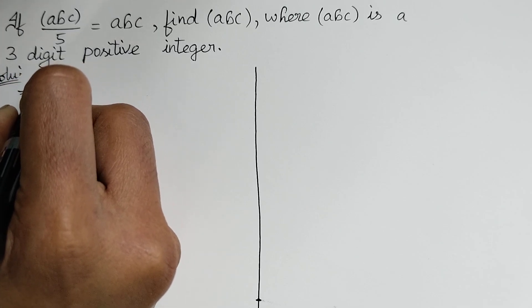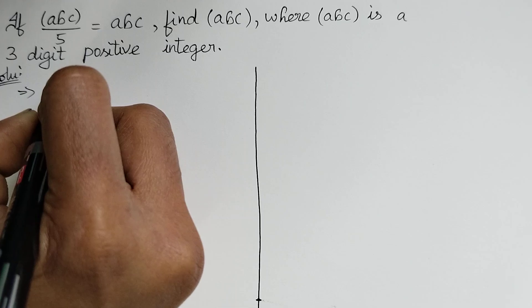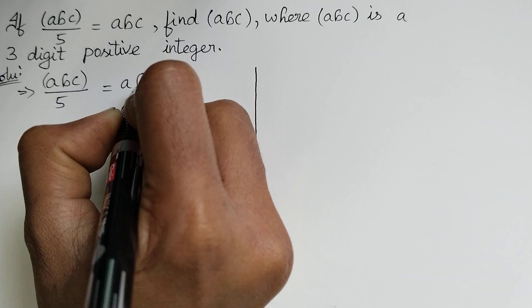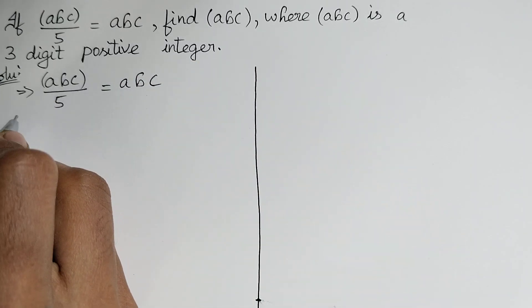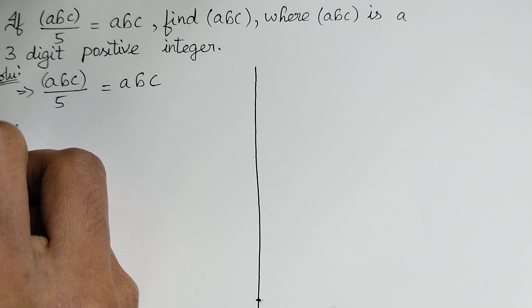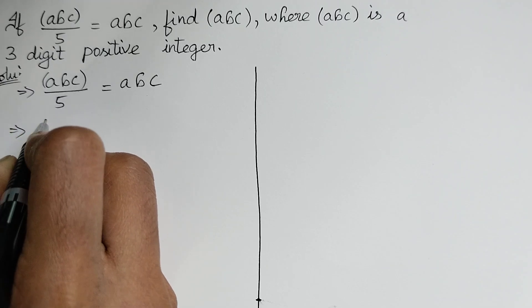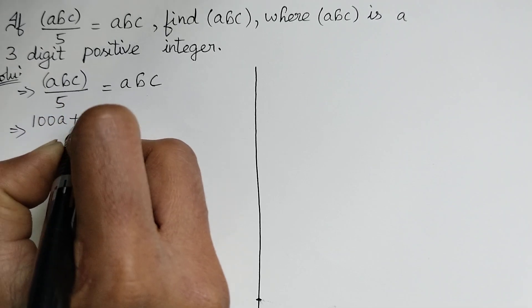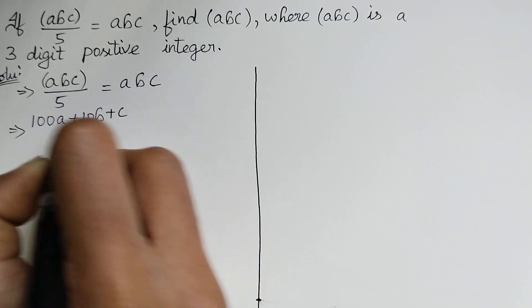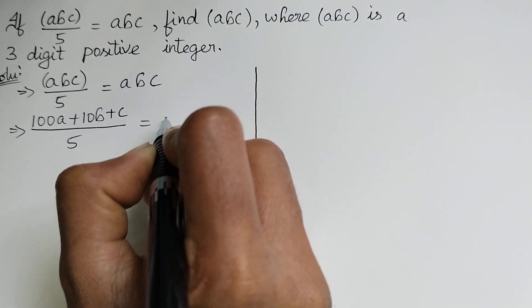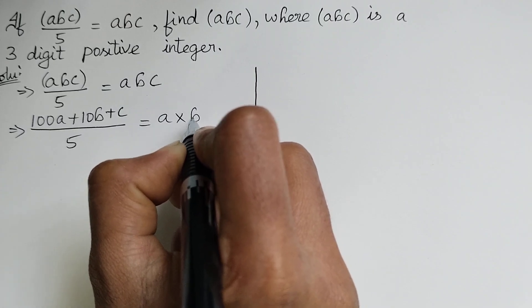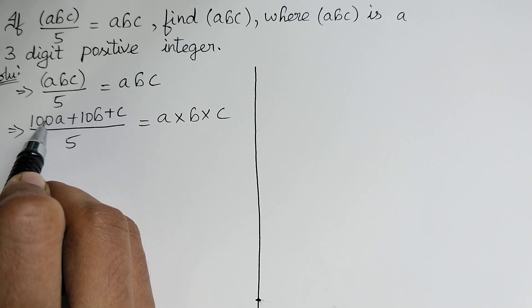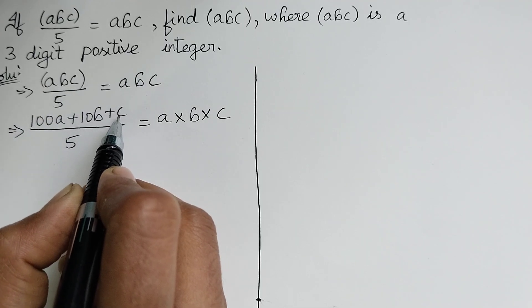It is given that the term abc divided by 5 is equal to abc. Now let us write this in mathematical form. 100a + 10b + c divided by 5 is equal to a × b × c. We have written this term in the form of 100 place, 10 place, and units place.